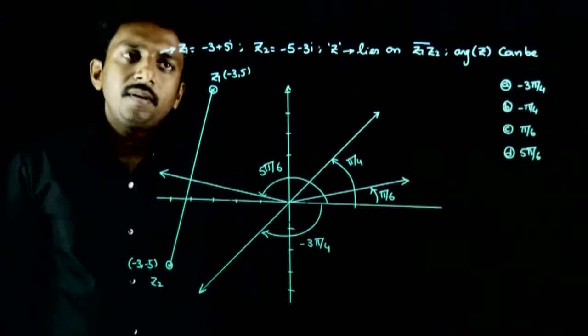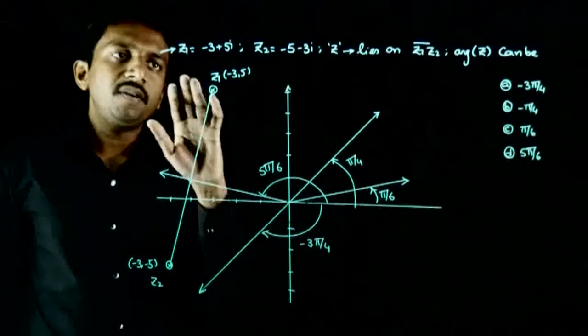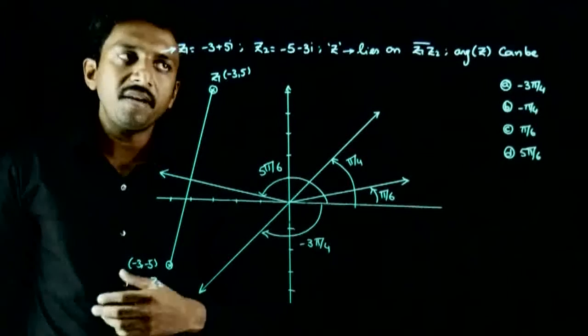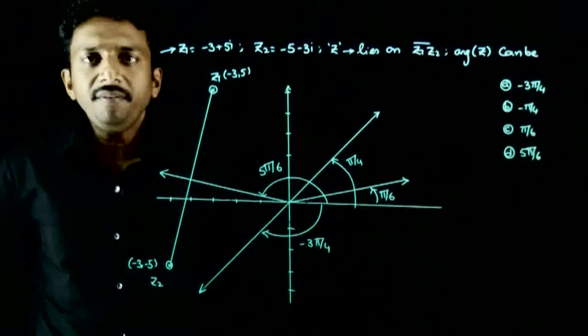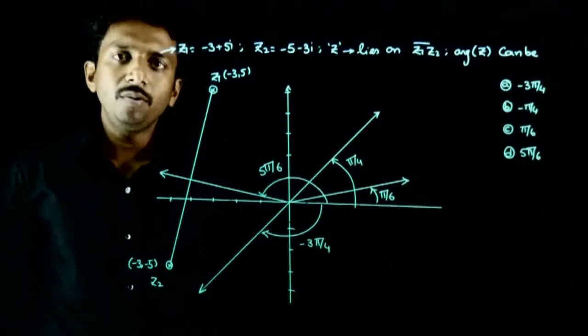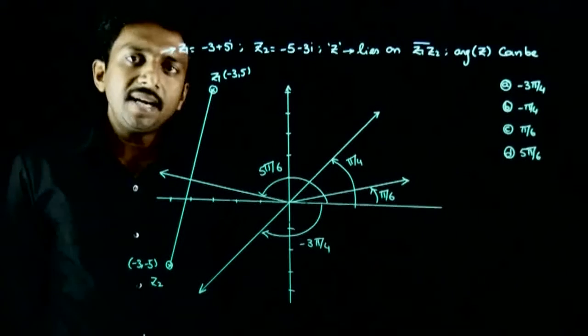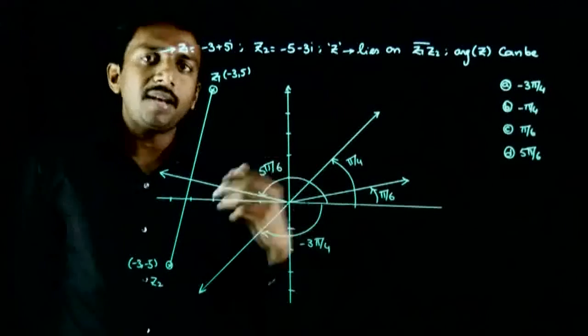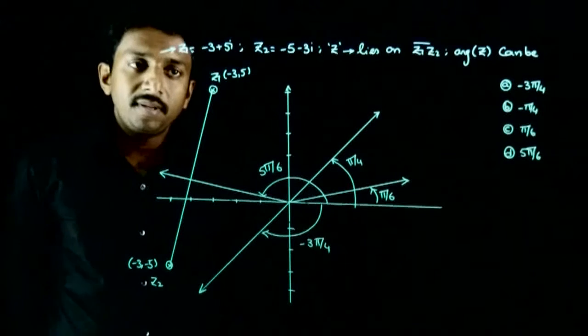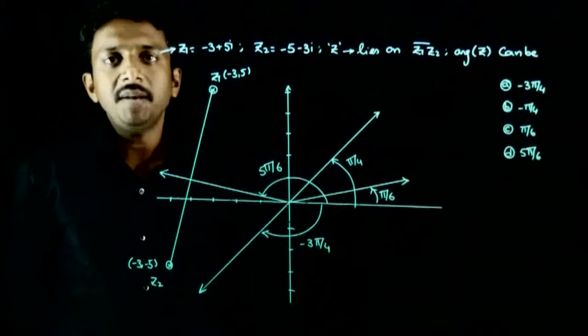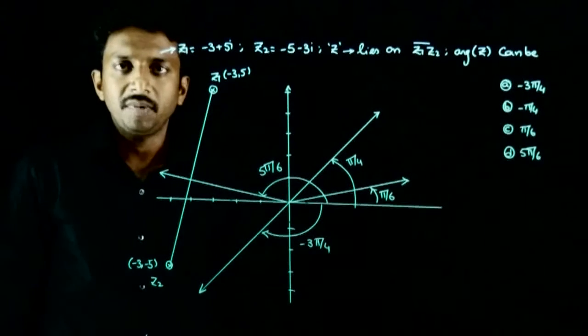Welcome students. This question gives us z1 = -3 + 5i and z2 = -5 - 3i. These two are complex numbers and z lies on the line segment joining z1 and z2. The question asks what the argument of z can be equal to.